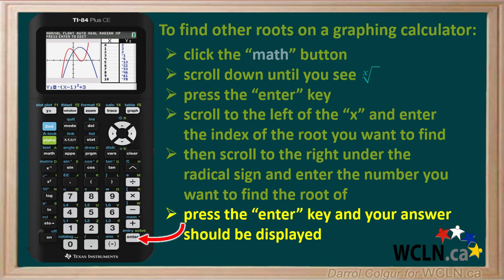Test this procedure by finding the fourth root of 81, which should be 3, and the fifth root of 32, which should be 2.